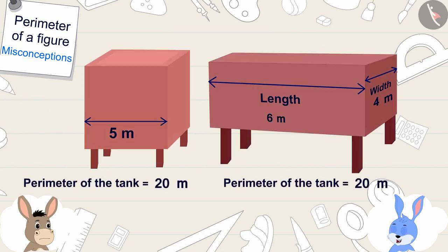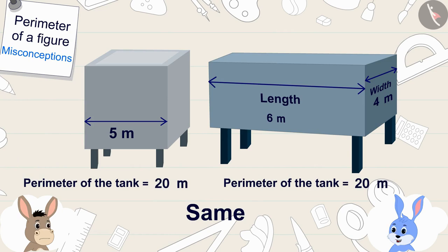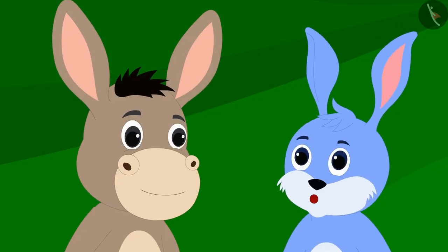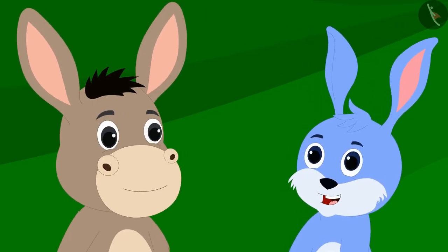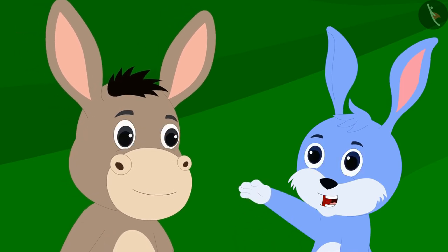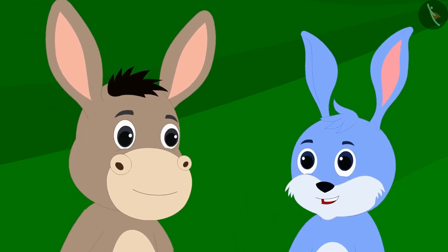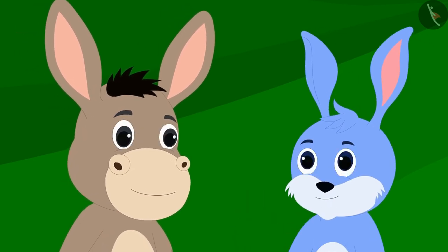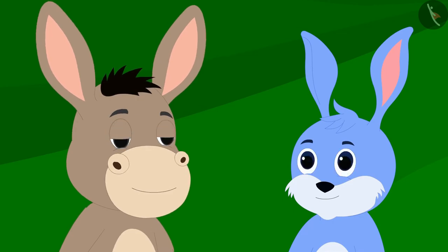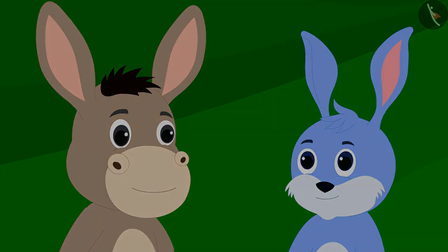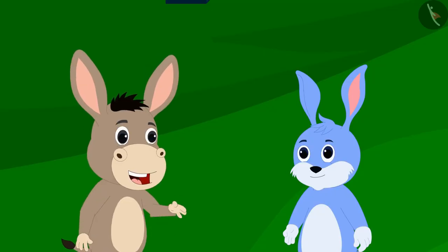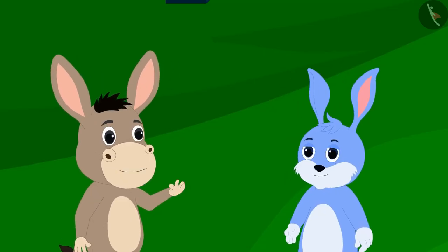'So the rectangular tank will have a perimeter of six plus six plus four plus four, which is twenty meters. Thus the perimeter of these two tanks are exactly the same — in other words, we both covered the same distance.'